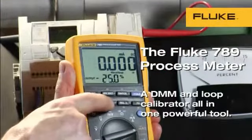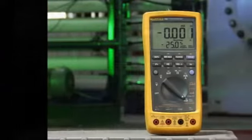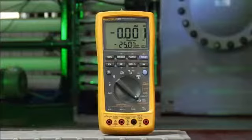The Fluke 789 process meter is a combination of a 4 to 20 milliamp loop calibrator and a CAT IV 600 volt safety rated DMM with an oversized display.